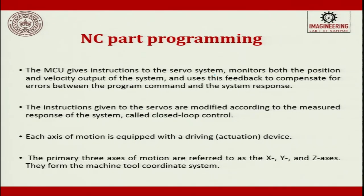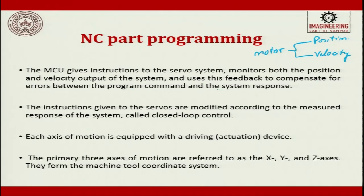The MCU gives instructions to the servo system and monitors both the position and velocity of the system. The feedback is used to compensate for error between the programmed command and the system response — the instructions given to the servo are modified according to the measured response, which is called closed loop. If there is no feedback it is an open loop system. The MCU compares the error signal from the lead screw and gives a signal plus error compensation to reach the required output.